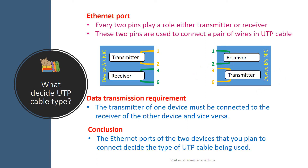In order to transmit data between the two devices, the transmitter of one device must be connected to the receiver of the other device, and vice versa. Therefore, the Ethernet ports of the two devices that you plan to connect determines the type of UTP cable being used.